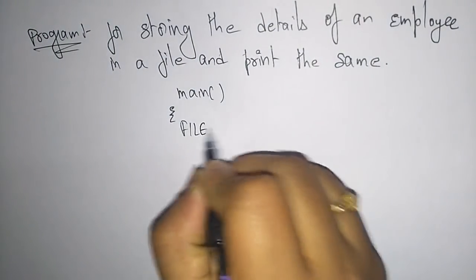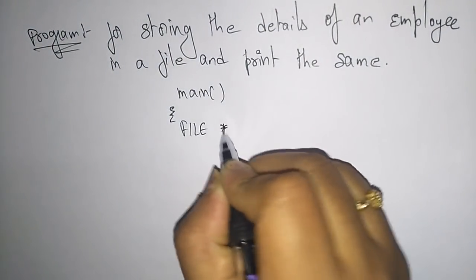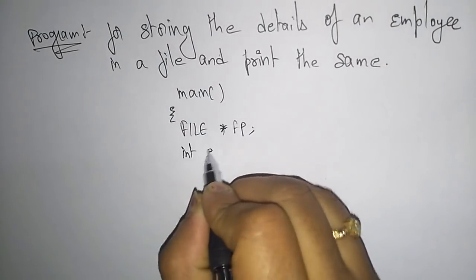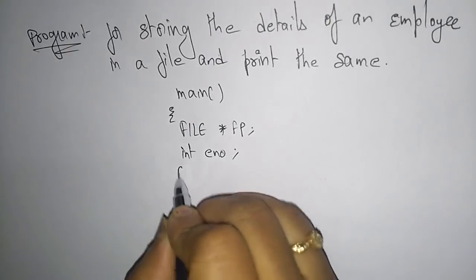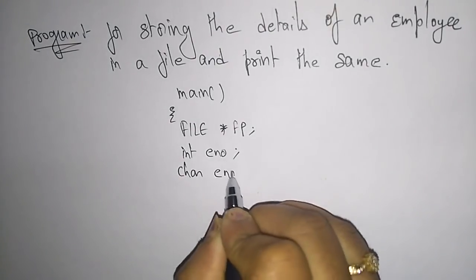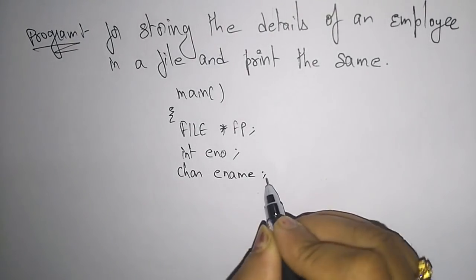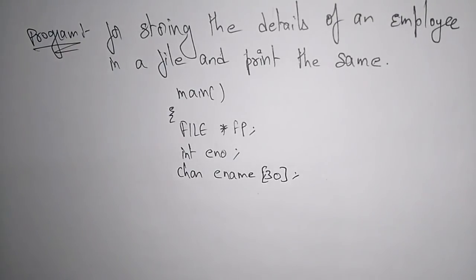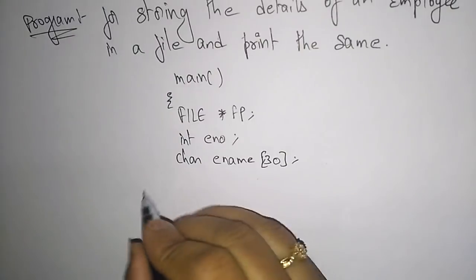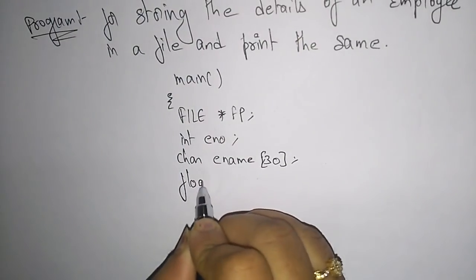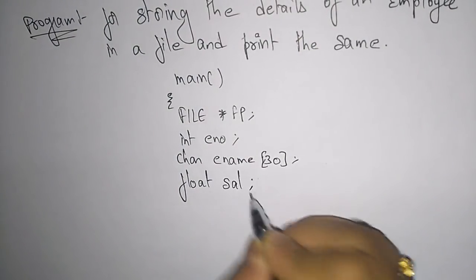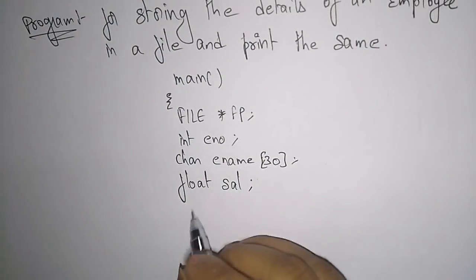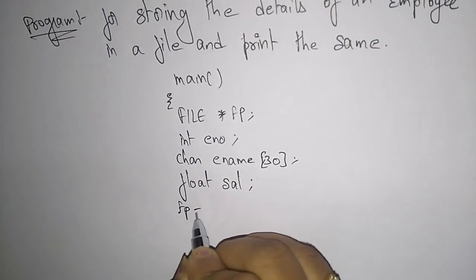First, you have to declare the file pointer fp. Then declare int employee number, character employee name — the employee name can be a character array up to 30 characters — and float salary. So I am going to enter the details: employee number, employee name, and salary. Now I want to open the file.